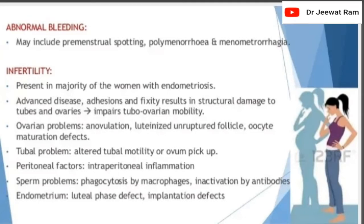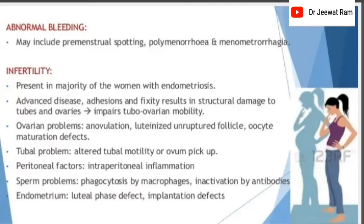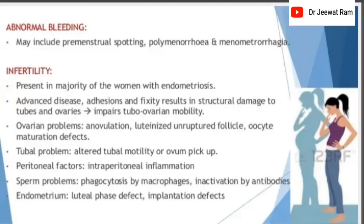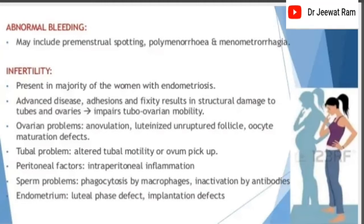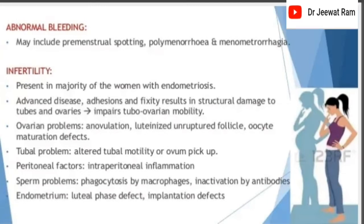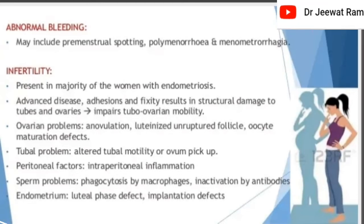Tubal problems include altered tubal motility or ovum pickup. Peritoneal factors include intraperitoneal inflammation. Sperm problems include phagocytosis by macrophages and inactivation by antibodies. Endometrial factors include luteal phase defect and implantation defects.